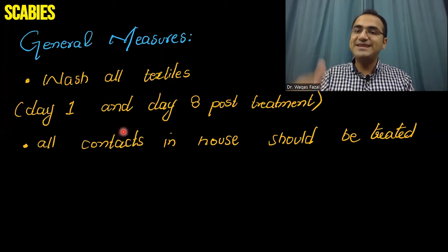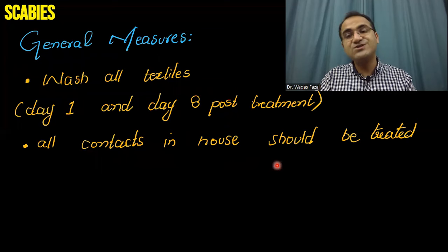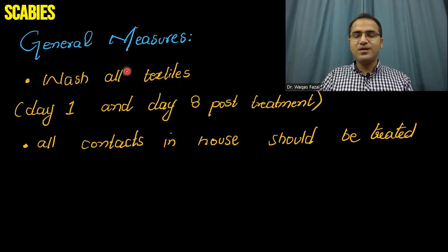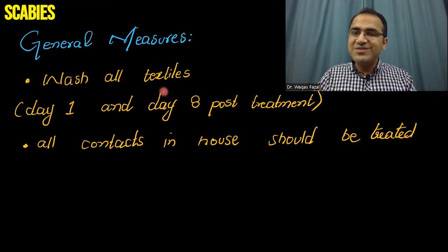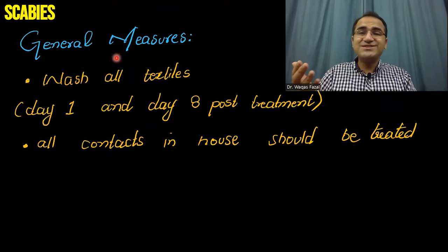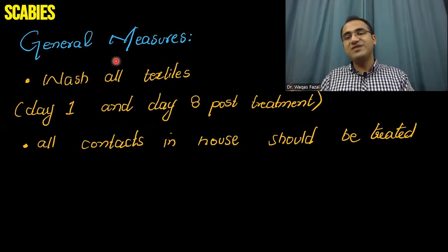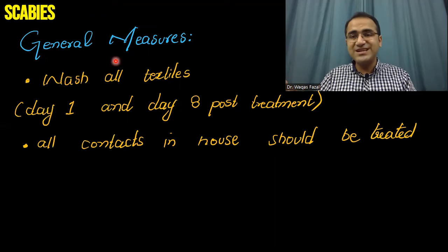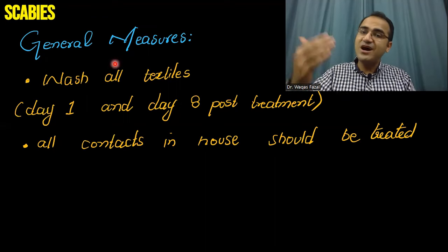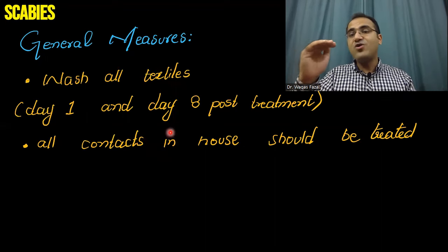All contacts in the household should also be treated. These general measures are more important than the medication itself, because if the patient does not follow them they will become reinfected from textiles or from infected household members. General measures must be followed as diligently as the treatment.